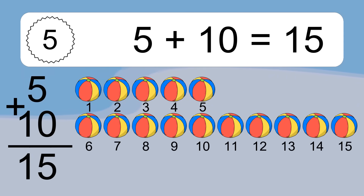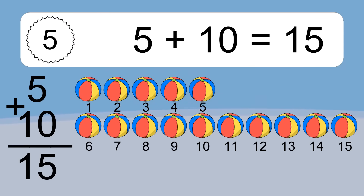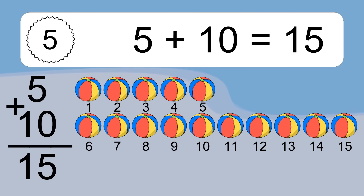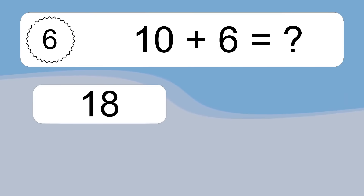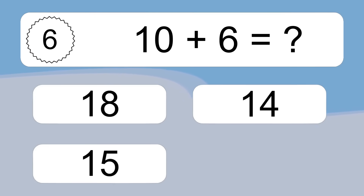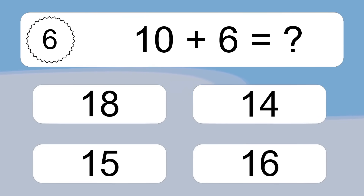Let's count it. 5 plus 10 equals what? 7, 9, 10, 11, 12, 13, 14, 15.